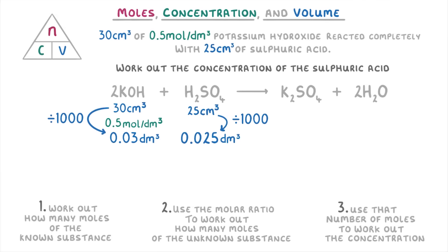So our first step is to calculate how many moles of potassium hydroxide we have, which we can do by multiplying its concentration by its volume. So we do 0.5 times 0.03, meaning we have 0.015 moles of potassium hydroxide.